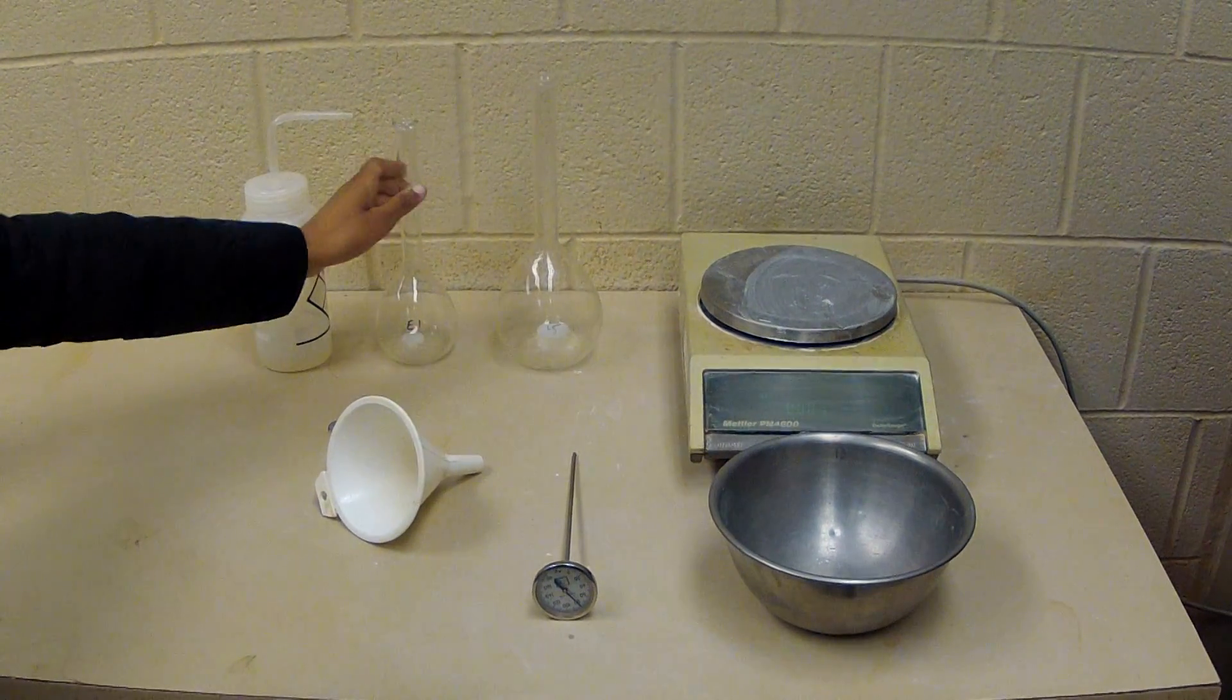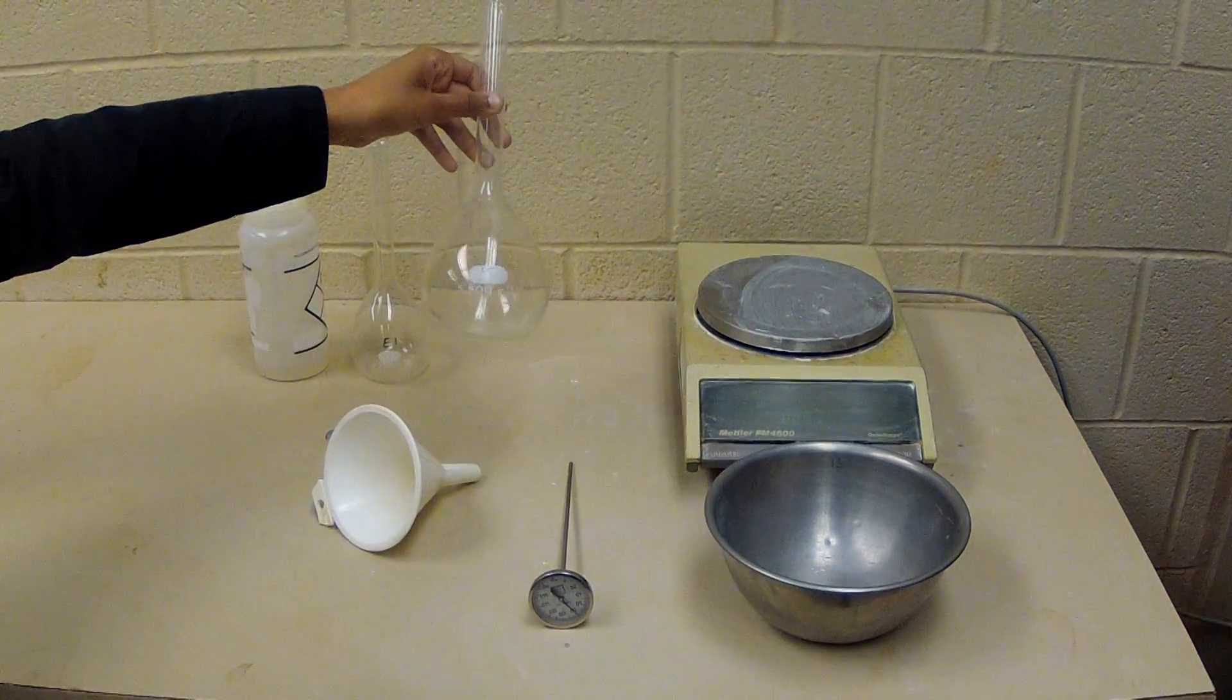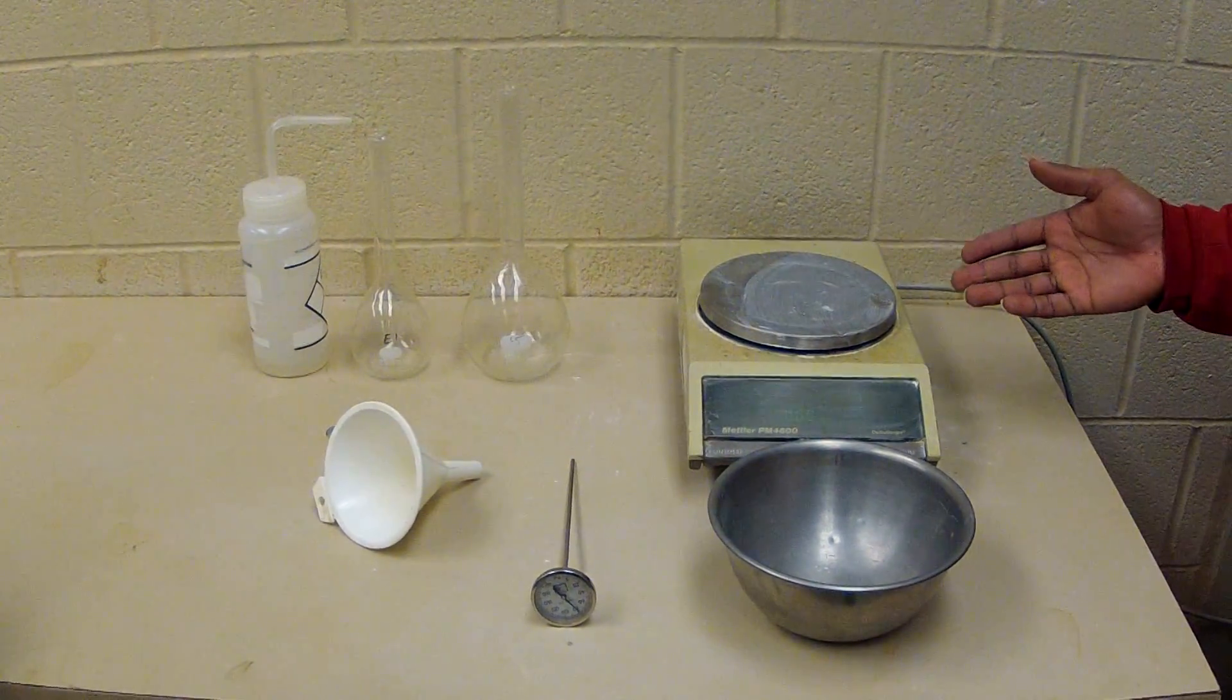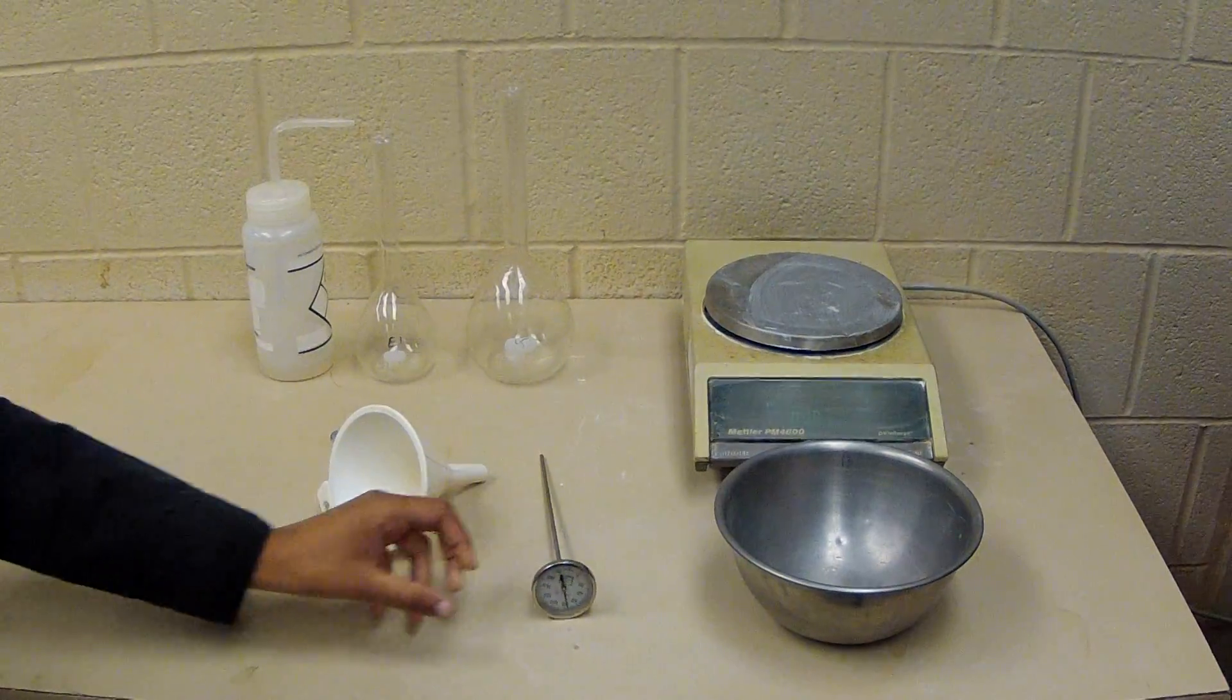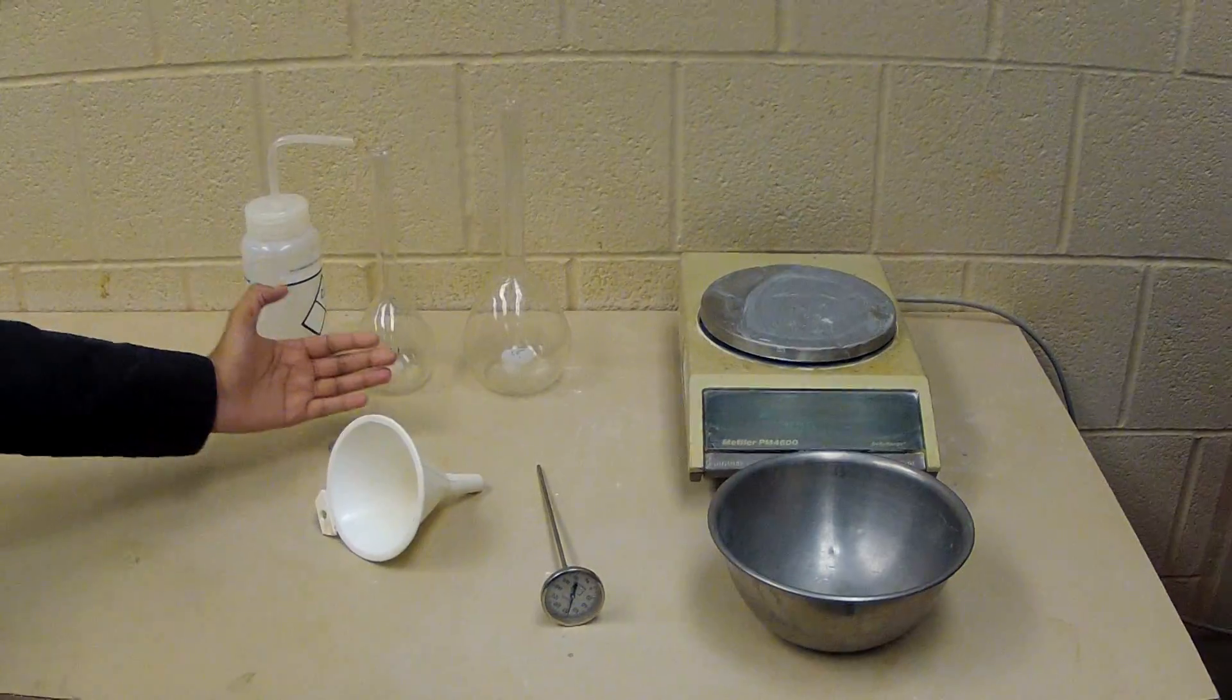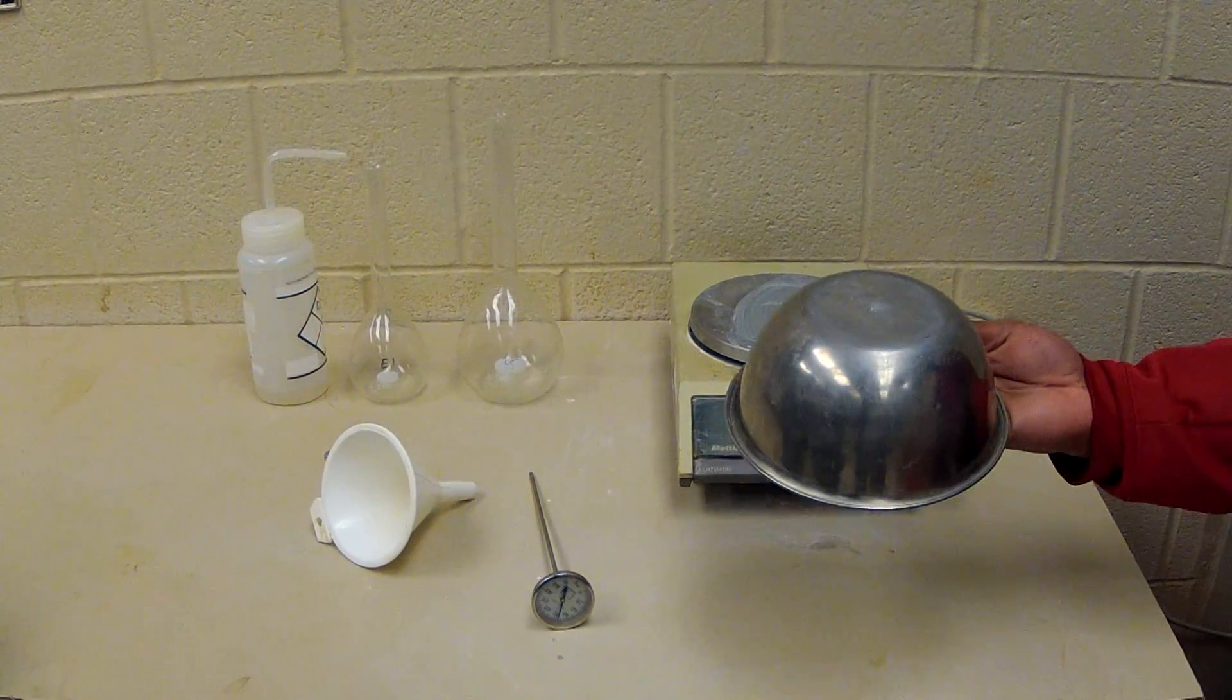The equipment used for this lab are as follows: two pycnometers of 250 milliliter or 500 milliliter capacity, a balance with readability of 0.01 grams, a thermometer with reading of 0.01 degrees C, de-aired water, a funnel, and a bowl.